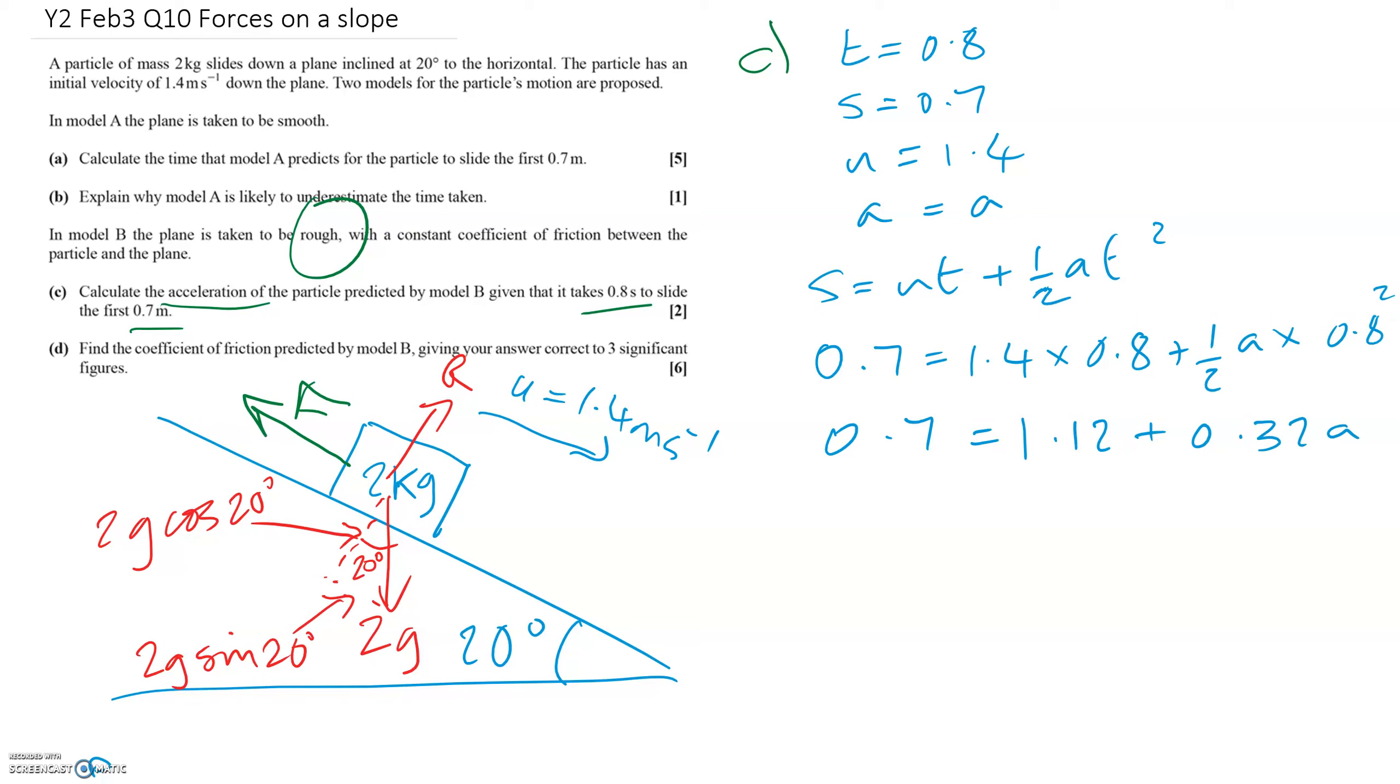So A is 0.7 minus 1.12 divided by 0.32. If you type that into a calculator, you should get A is negative. 0.7 minus 1.12 is negative. So the final answer for the acceleration is minus 1.3125 meters per second squared. And we're going to need to use that for part D.